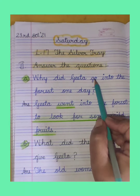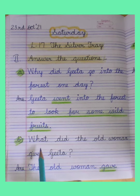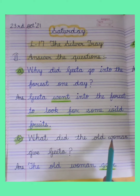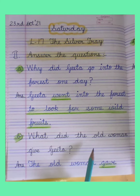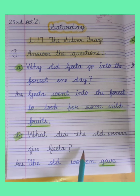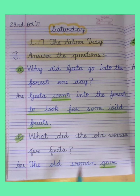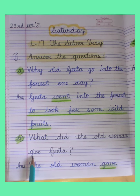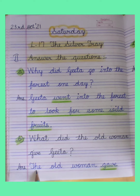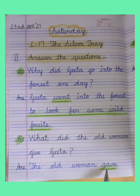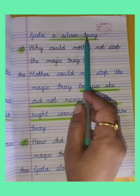So 'go' changes into 'went'. Question 2: What did the old woman give Gita? Again, 'give' changes into 'gave'. 'Give' is present tense and 'gave' is past tense. Answer: The old woman gave Gita a silver tray.